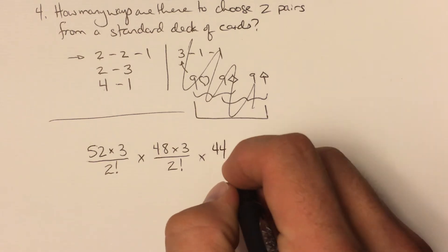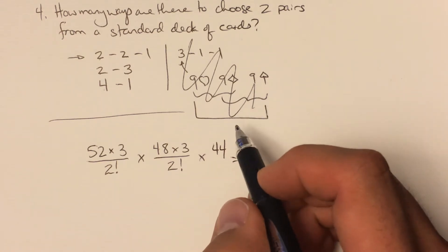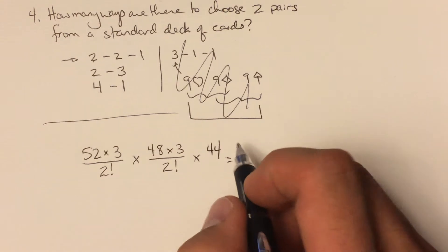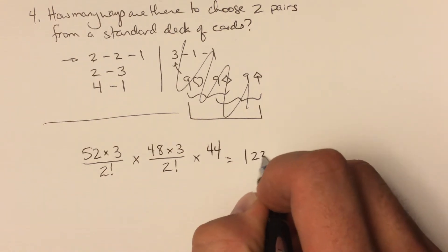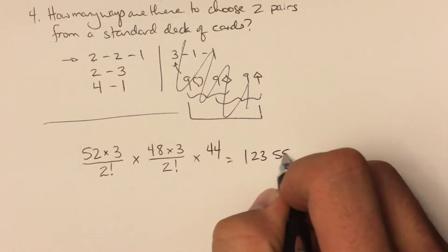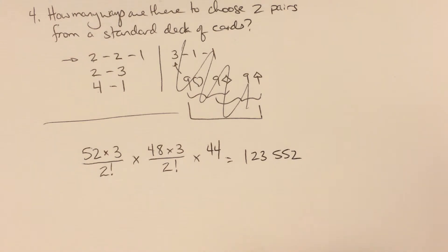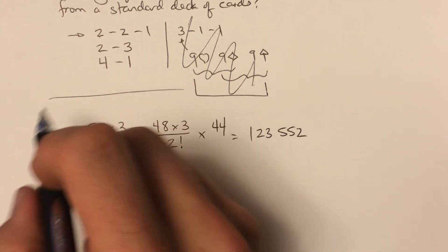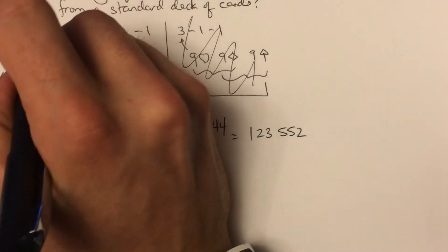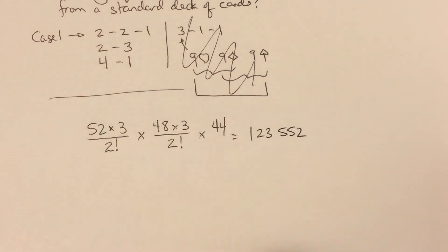And last, we're going to choose one more card. There are only 44 cards left, and we don't need to divide—there's only one order to do that in. So if we finish that off and simplify it, we get 123,552.